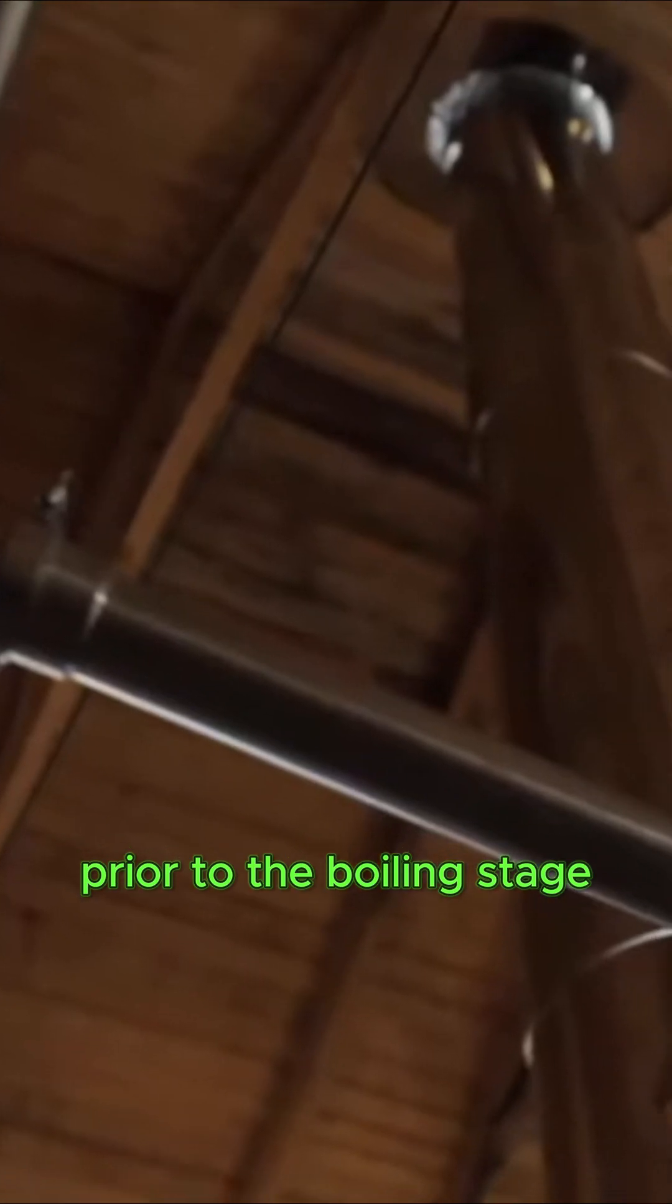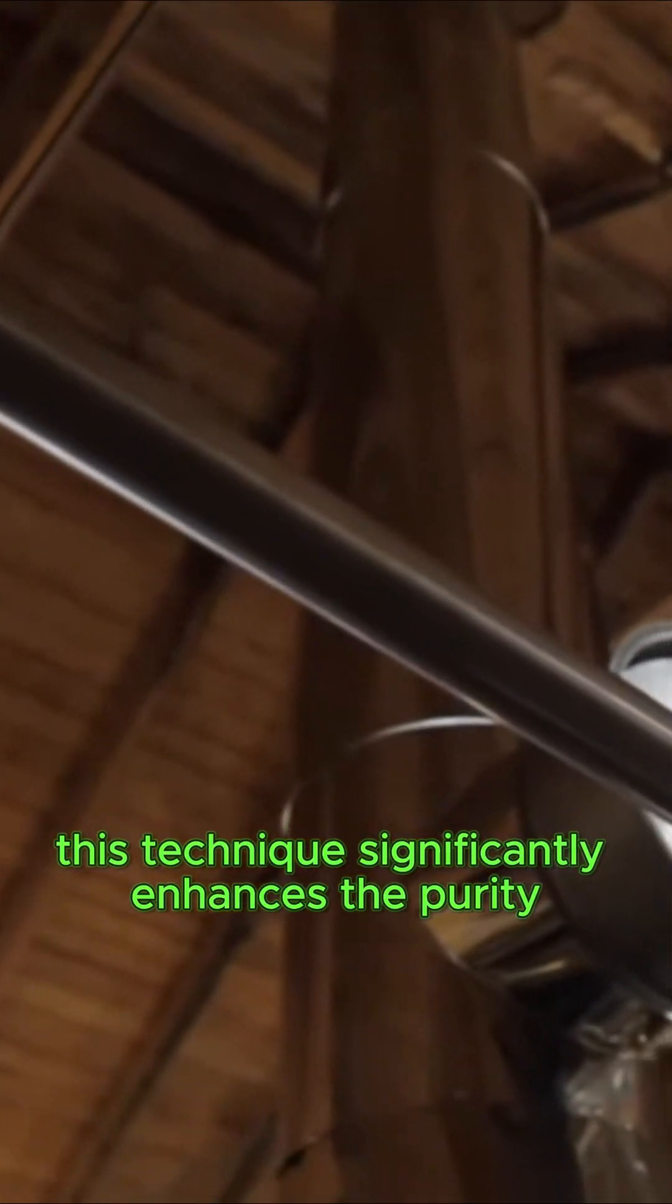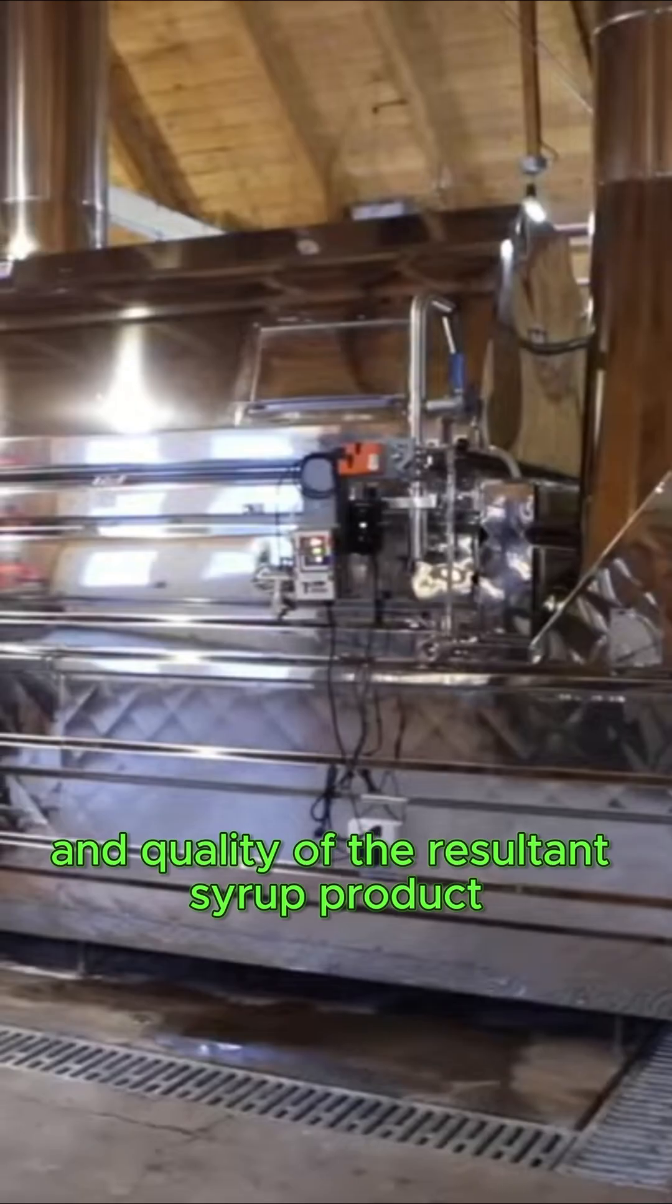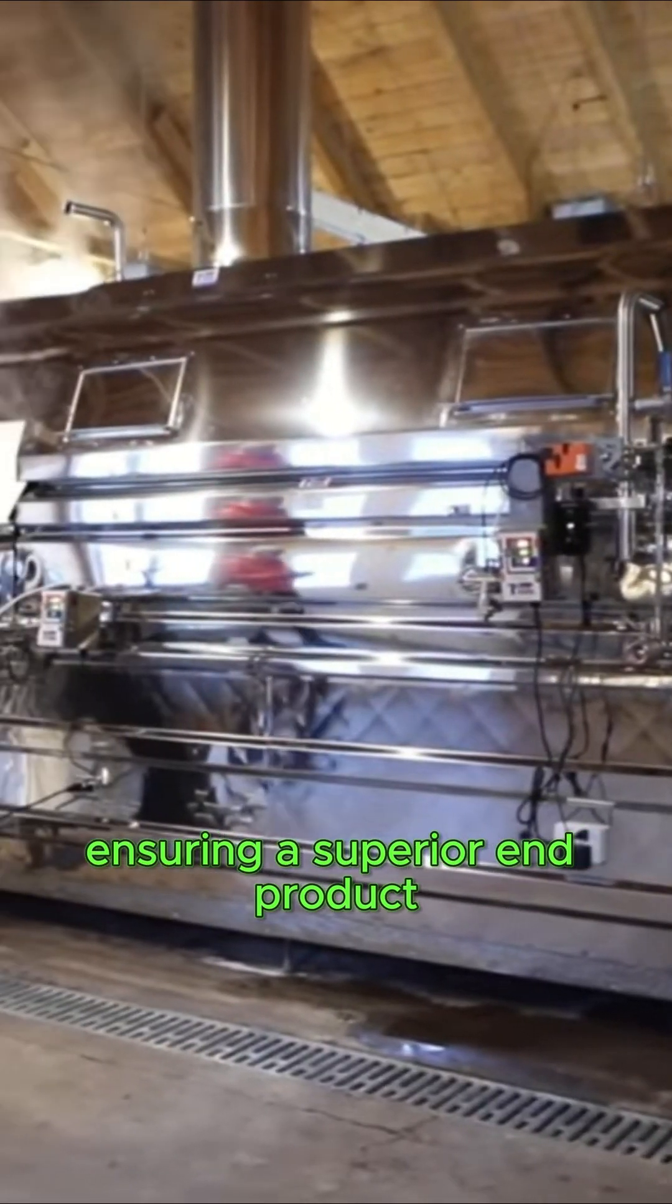Following collection, the sap undergoes a reverse osmosis process aimed at concentrating its sugar content prior to the boiling stage. This technique significantly enhances the purity and quality of the resultant syrup product, ensuring a superior end product.